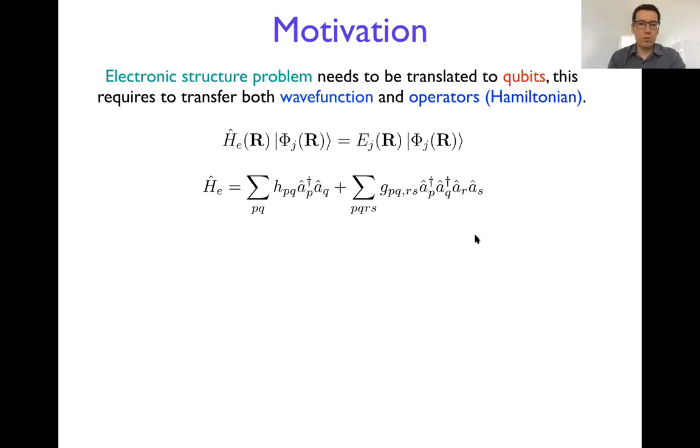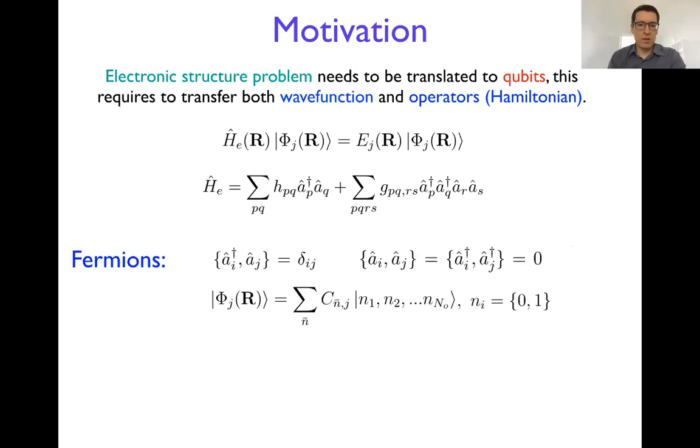So far we formulated the second quantized form of electronic structure problem that has the electronic Hamiltonian and also the wave function written as a linear combination of Slater determinants written in the occupation numbers and our a and a dagger creation annihilation operators.